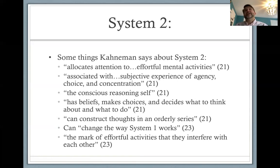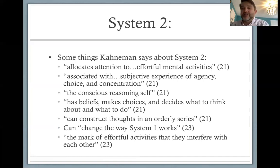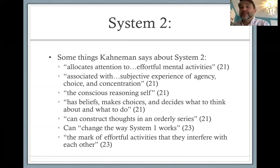Another thing Kahneman mentions to distinguish system one and system two: system one is clearly multi-processing lots of different information at the same time. When I'm looking at this computer screen, I'm not only seeing and understanding the words, but also making out what the edges of the text box are, assessing the light distribution, the color — all of that is going to be system one processes happening simultaneously.